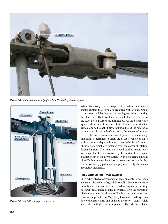When discussing the semi-rigid rotor system, instructors should explain that some are designed with an underslung rotor system which mitigates the lead/lag forces by mounting the blades slightly lower than the usual plane of rotation so the lead and lag forces are minimized. As the blades cone upward, the center of pressure of the blades is almost in the same plane as the hub. The center of gravity (CG) is below the mast attachment point. This underslung mounting is designed to align the blade's center of mass with a common flapping hinge so that both blades' centers of mass vary equally in distance from the center of rotation during flapping. Simply put, underslinging effectively eliminates geometric imbalance.